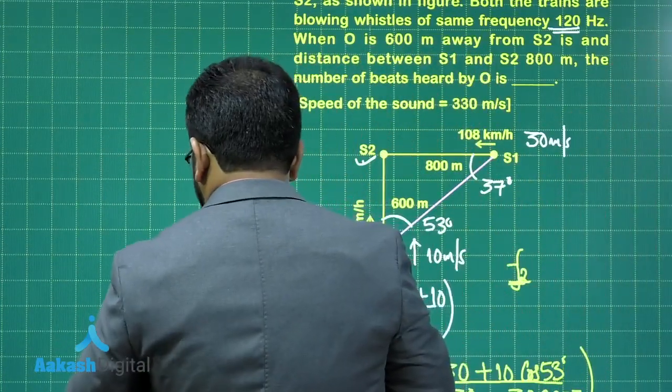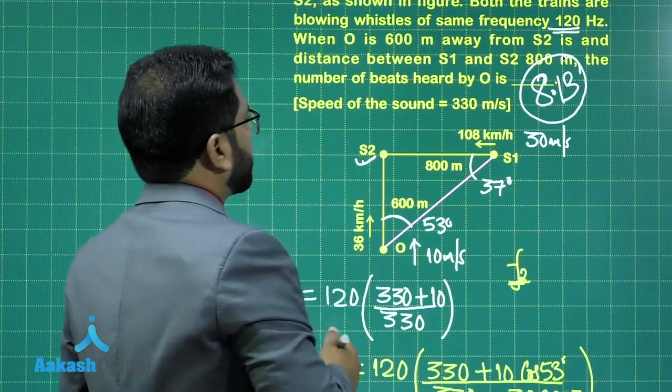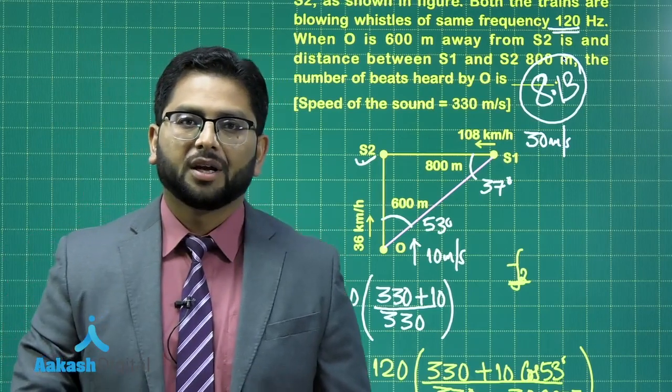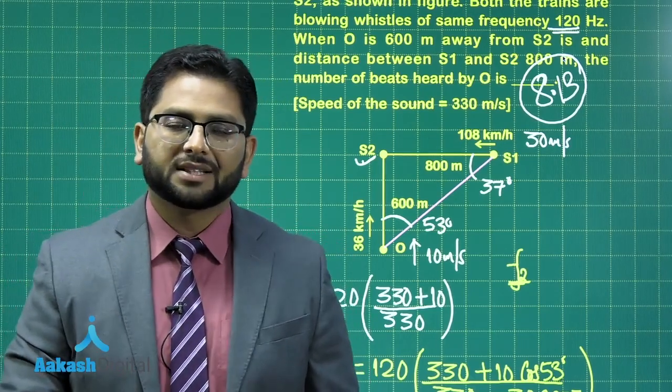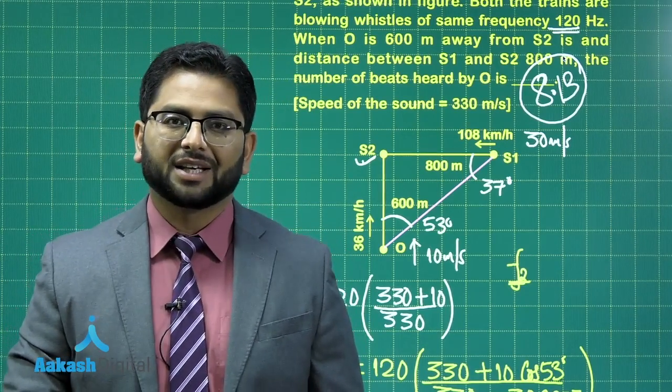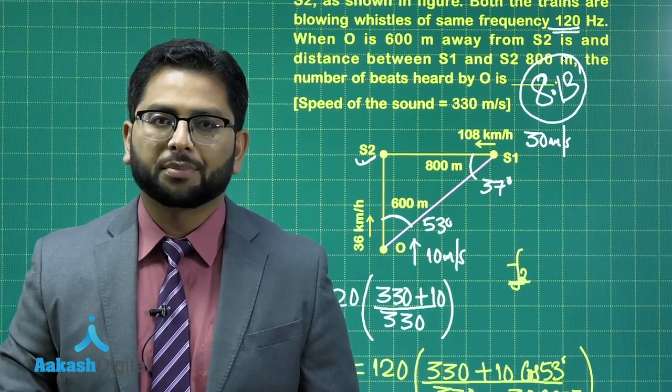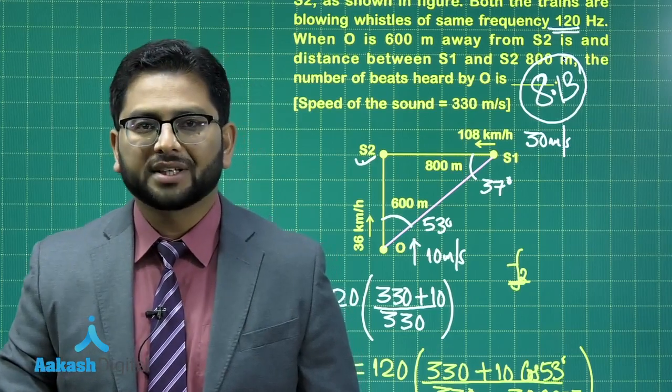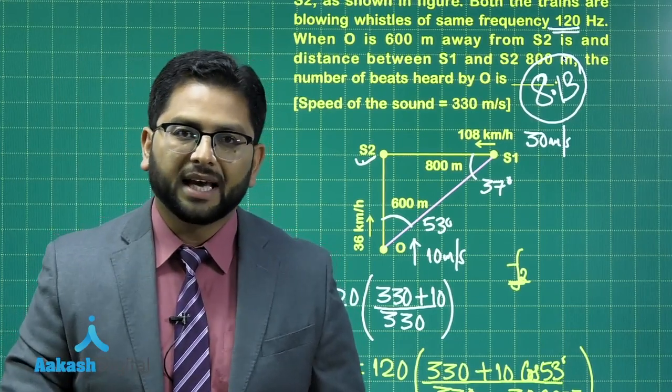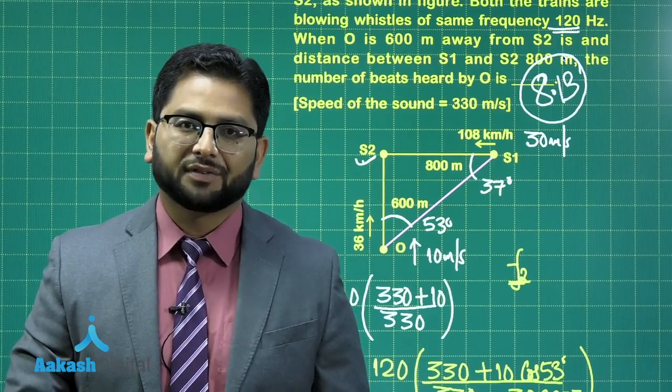The correct value for this would be 8.13. So this is the correct option for question number 6, the last question of section 3. Well, with this question, we finish off the discussion of physics, paper 1, J.E. Advance 2019. If you are the one who have given the examination, I wish and pray for your better future, and if you are the future aspiring, hope the discussion, which we had made deliberately precise, was really helpful, and you could get sufficient insight which was desired. Thanks for watching, thank you very much.